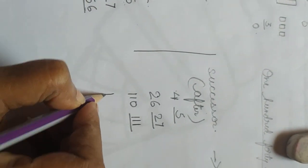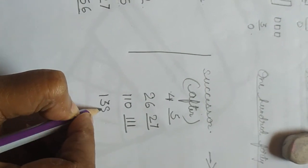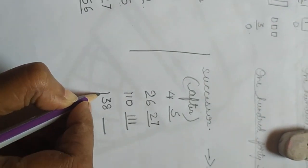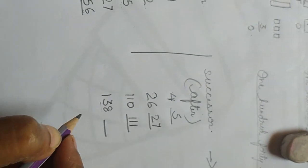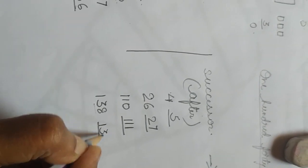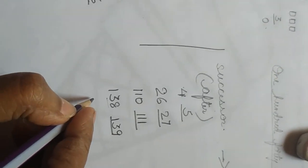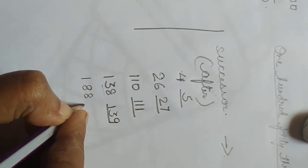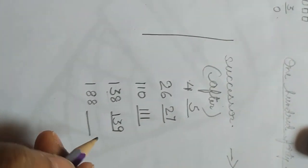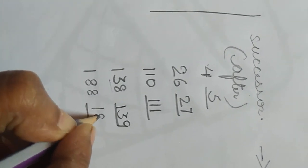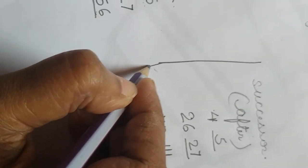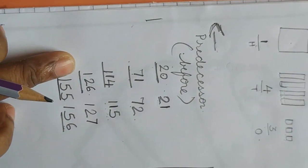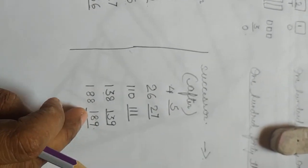Okay. Now 138. After 138, which number comes? 139. Understood? Now one more sum — one hundred and eighty-eight. After one hundred and eighty-eight comes one hundred and eighty-nine. So understood what are before numbers — predecessor numbers — and what are after numbers — successor numbers.